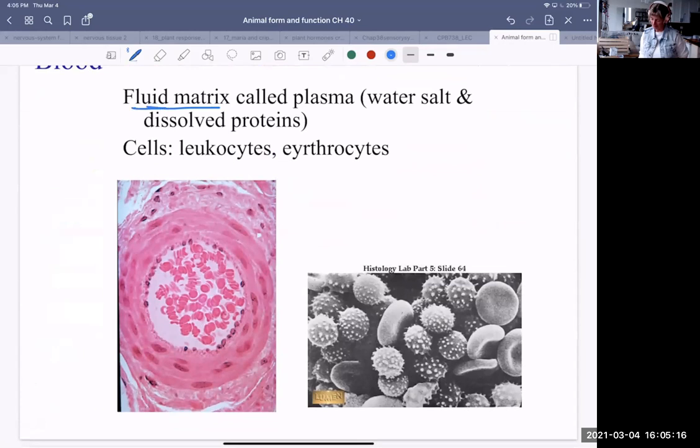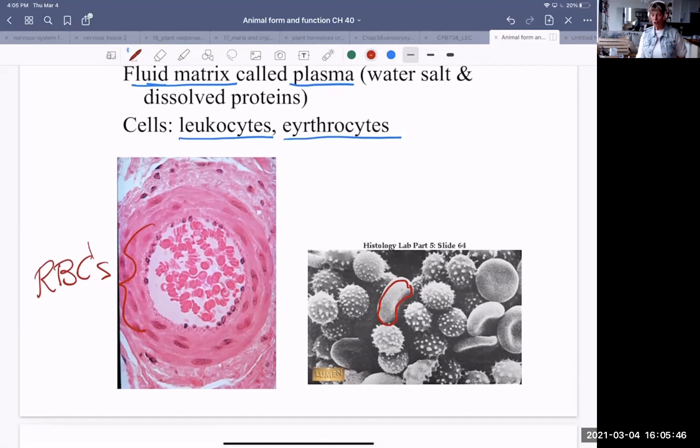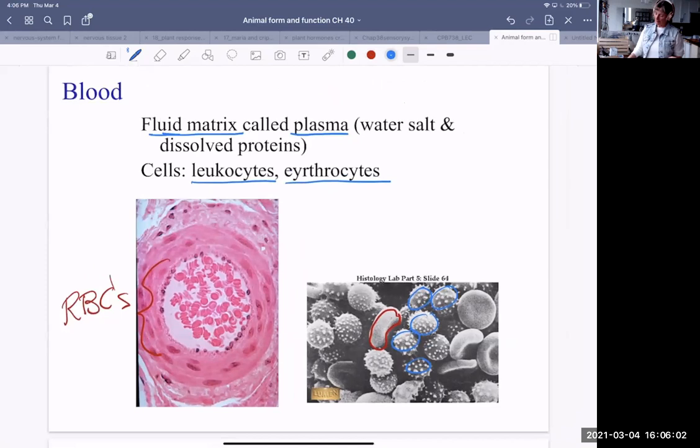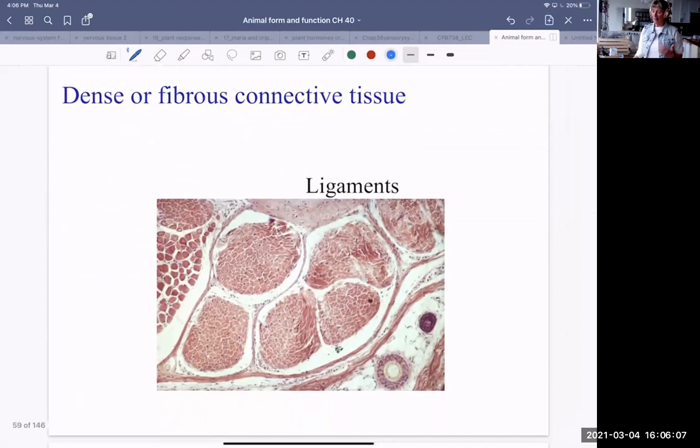Blood. Blood has a fluid matrix. And it's called plasma. It consists of water, salt, dissolved proteins. The cells are known as leukocytes. That's a general term for white blood cells. And erythrocytes. That's a general term for red blood cells. So in this one, of course, these are all red blood cells. I don't really see any white blood cells in there. This is a slide. An electron microscope slide showing the red blood cells, but also quite a few white blood cells. So if you're doing a blood test, you might find somebody with, say, leukemia will have a large proportion of white blood cells that are multiplying in an uncontrolled fashion.